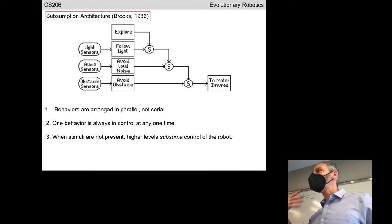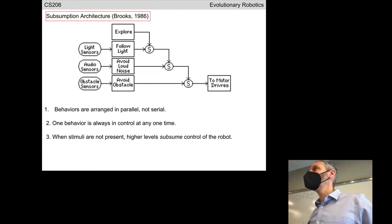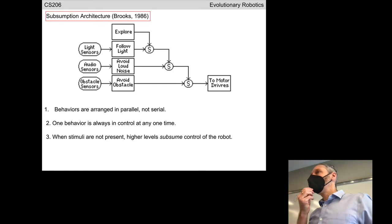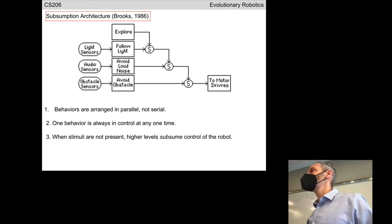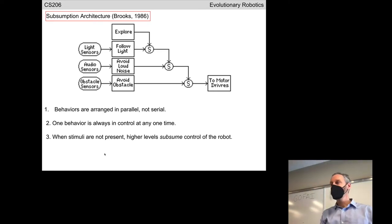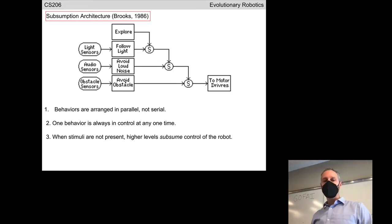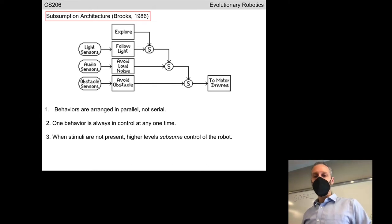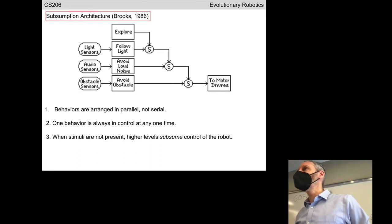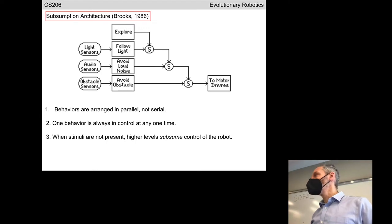Most animals and humans are constantly in motion. Even when you're sitting quietly in the classroom, your body is constantly moving — your eyes are saccading, jumping from here to there across the classroom. How do we create a robot that's useful and also always in motion? Brooks sat down with some of his grad students and eventually came up with what has been known as the subsumption architecture. There are a number of basic behaviors like avoid obstacles, avoid loud noises, follow the light, and explore. Some of these behaviors are tagged as being more important than others — avoiding obstacles is probably the most important one.